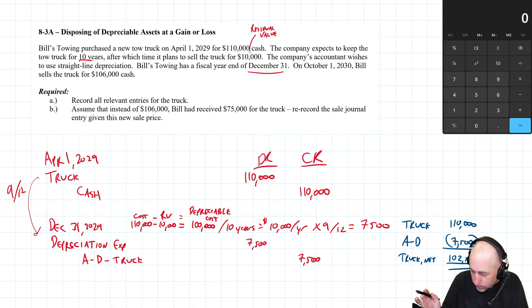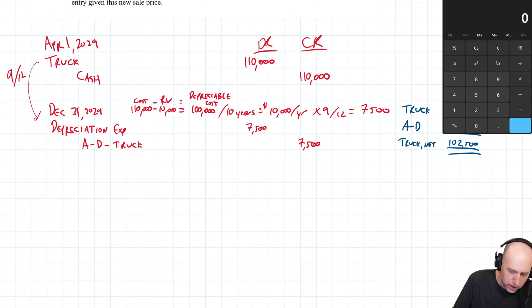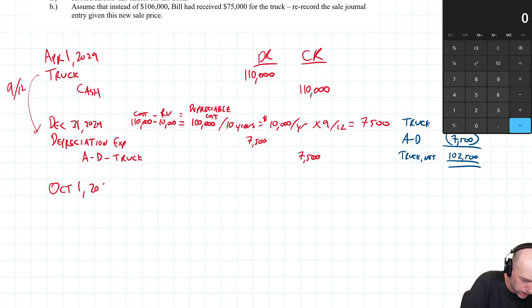What's the next relevant date? The next relevant date is October 1st, 2030. What do we have to do on October 1st, 2030? We got to sell the truck, but before we can sell the truck you have to depreciate the asset up to the date of the sale. So we have to do another depreciation. How many months between December 31st and October 1st? January, February, March, April, May, June, July, August, September, we don't count October because it's October 1st. Nine months, so that's nine twelfths of a year.